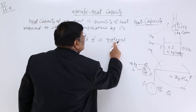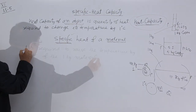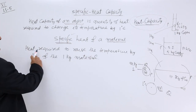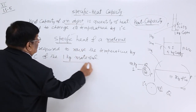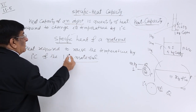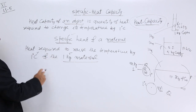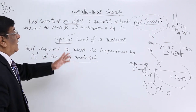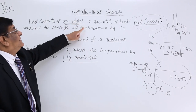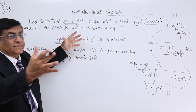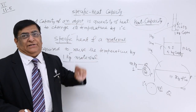Specific heat is a characteristic of the material. How do we define it? Heat required to raise the temperature by 1 degree of 1 kg of material. Mass is fixed, temperature rise is fixed — whatever heat is required for 1 kg, that is known as specific heat. This is the property of the material. Only 1 degree Celsius is the condition.